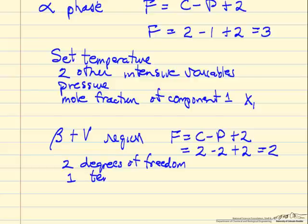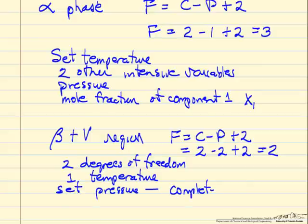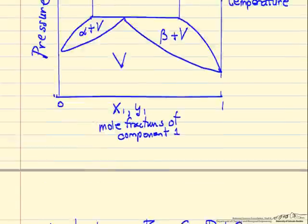Of course one is temperature, and we've already set that in the diagram, so we can set one more. So if we set pressure, then we've completely specified the system. We go back and look at the diagram.